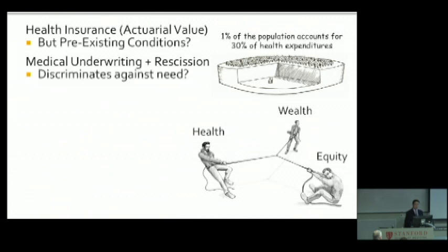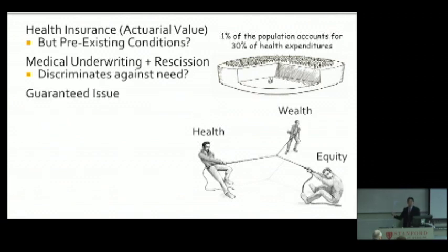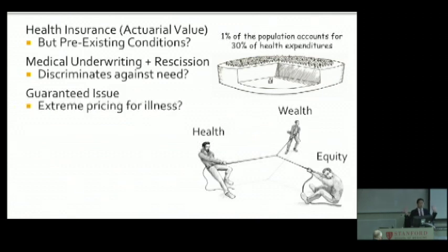Are we just fundamentally discriminating against the people who actually need health care coverage the most? And if that's the case, then what's the point of even having a health care system? Well, you might think we need some laws and regulation — guaranteed issue. That means health insurance companies cannot turn you away for having pre-existing conditions. But then the insurance company will just charge you ten times more to make up for the expected cost. Eventually the pricing becomes so extreme that it's not really affordable, not really being offered. So again, what's the point?